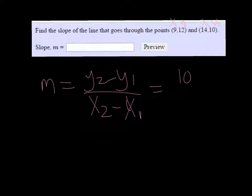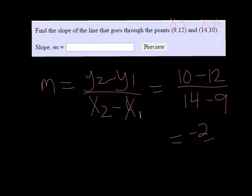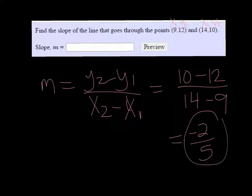I've got y2 is 10, y1 is 12, x2 is 14, and x1 is 9. Doing the arithmetic here, we get negative 2 fifths.